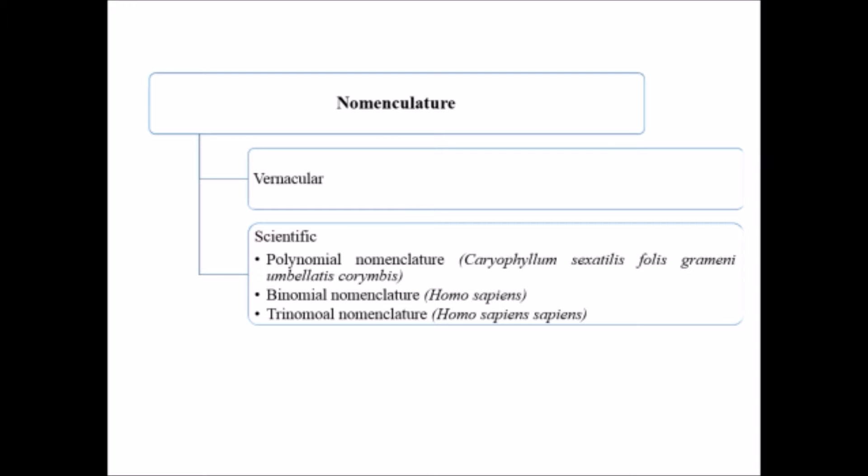This name is fully characterizing the organism - Caryophyllum means organism growing under rock, having an umbellate form of flowering inflorescence. It's for nomenclature taking the morphology of any organism, but it's too long to remember. So it was then reduced to binomial nomenclature by Carolus Linnaeus. I have taken the example here of Homo sapiens, which is human beings. Sometimes trinomial nomenclature is also accepted as Homo sapiens sapiens.